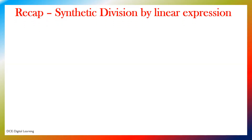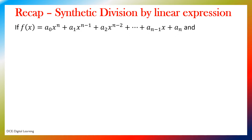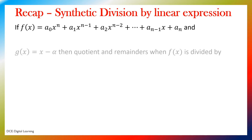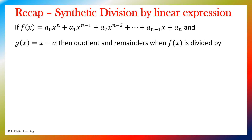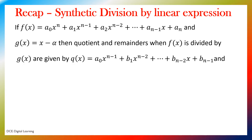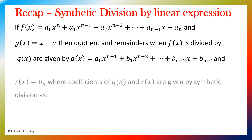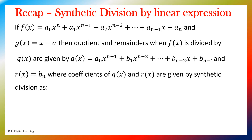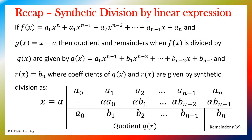Recap: synthetic division by linear expression. If f(x) equals a₀xⁿ + a₁xⁿ⁻¹ + a₂xⁿ⁻² + ... + aₙ₋₁x + aₙ, and g(x) equals x minus alpha, then the quotient and remainder when f(x) is divided by g(x) are given by q(x) equals a₀xⁿ⁻¹ + b₁xⁿ⁻² + ... + bₙ₋₂x + bₙ₋₁, and r equals bₙ, where coefficients are given by synthetic division. We will get coefficients of q(x) and remainder bₙ by calculation as shown in the table.